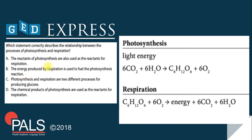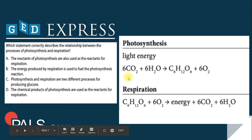Which statement correctly describes the relationship between the processes of photosynthesis and respiration? A: The reactants of photosynthesis are also used as the reactants for respiration. B: The energy produced by respiration is used to fuel the photosynthesis reaction. C: Photosynthesis and respiration are two different processes for producing glucose. D: The chemical products of photosynthesis are used as the reactants for respiration. What do you think is the answer?